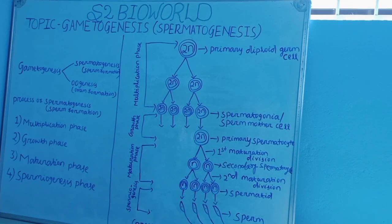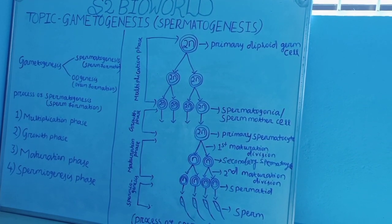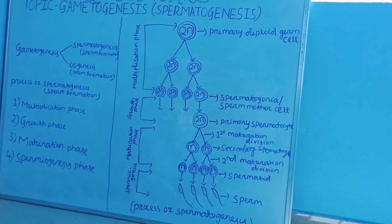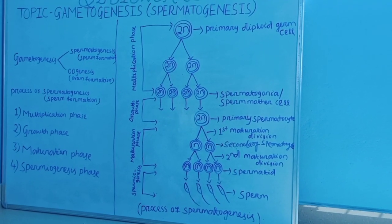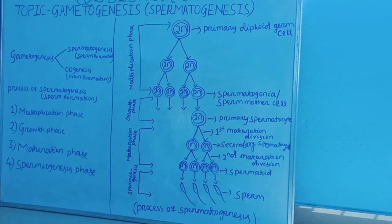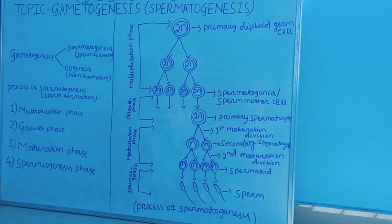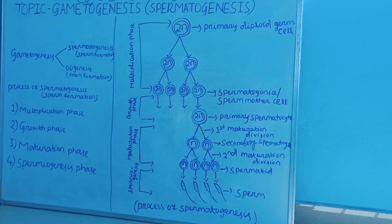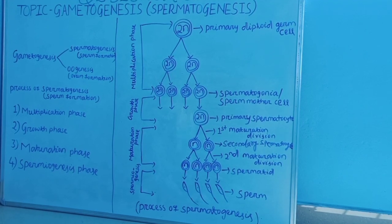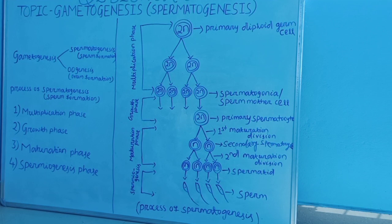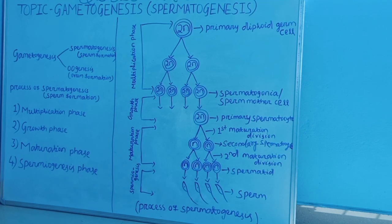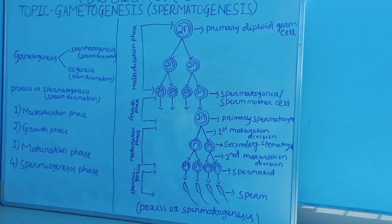Spermatogenesis is the process of origin, development and maturation of sperm inside the testis of male. In human beings, particularly males, during puberty at the age of 13 to 15 years, the process of Spermatogenesis starts. Spermatogenesis takes place in the seminiferous tubules of the testis, which are lined by germinal epithelium. Germinal epithelium contains cuboidal primary germ cells and Sertoli cells.